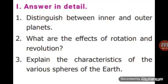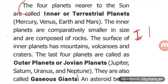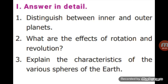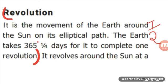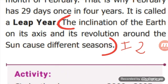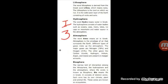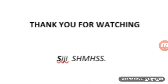Next, answer in detail. First question: distinguish between inner and outer planets. The answer is given here. Next question: what are the effects of rotation and revolution? First, explain about rotation, then explain about revolution. Okay children, next question: explain the characteristics of the various spheres of the Earth. The answer is given here. Okay children, thank you.